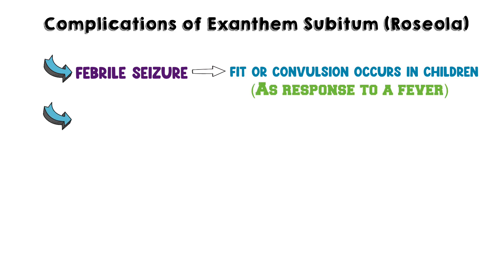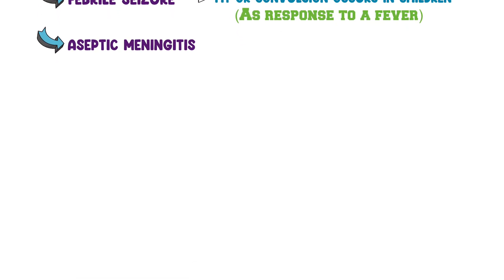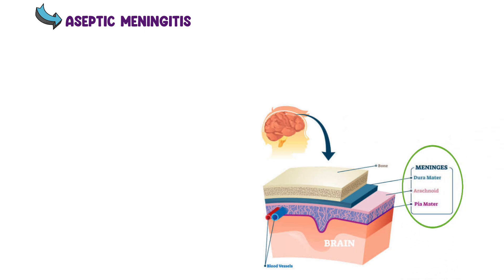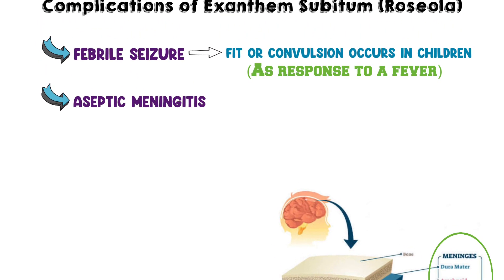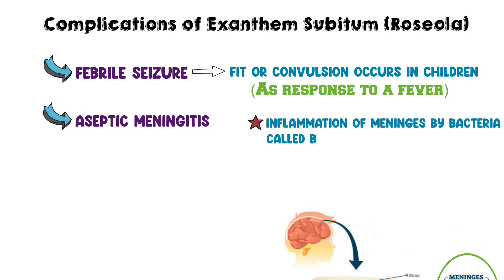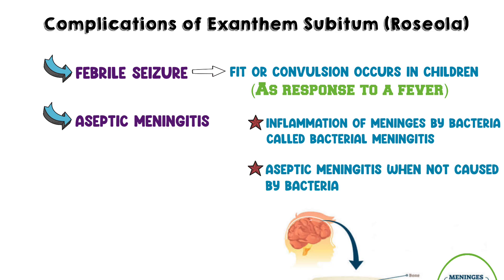Number 2 is aseptic meningitis. Meningitis is a condition that causes the tissues covering your brain and the spinal cord called meninges to become inflamed. This inflammation can be caused by bacteria, known as bacterial meningitis. The condition is called aseptic meningitis when not caused by bacteria.